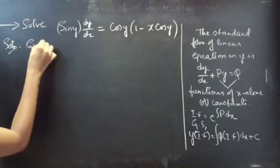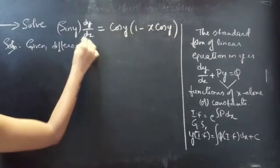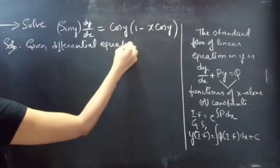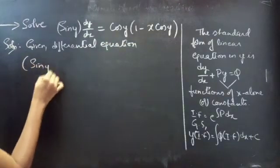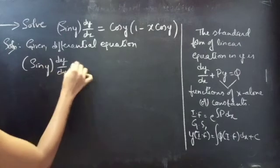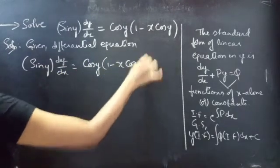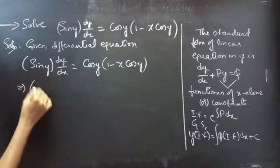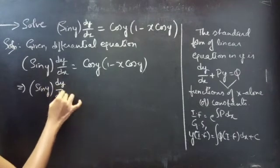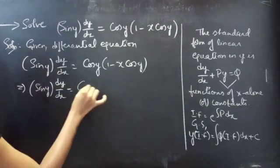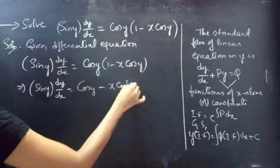Now, coming to the problem. The given differential equation is sin y · (dy/dx) = cos y · (1 − x cos y). Then sin y · (dy/dx) = cos y · cos y − x · cos y · cos y, where cos y · cos y is cos² y.